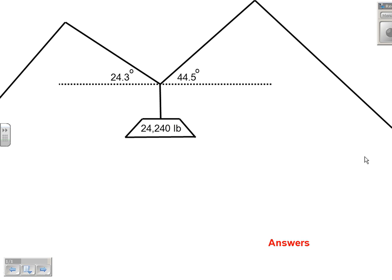Here we have a very classic tension problem utilizing vectors. The precept of this problem is over here on the left we have a crane, and over here on the right we have a crane, and together through cables those two are supporting our 24,240 pound weight in a state of equilibrium. So it's not moving left, not moving right, not moving up, not moving down.